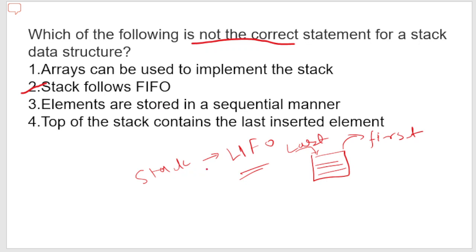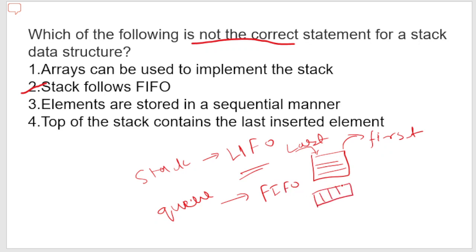It's like piling up data — the last data goes out first, so it is LIFO. That's why option B is incorrect. Queue works on FIFO — whichever element comes first will go out first.